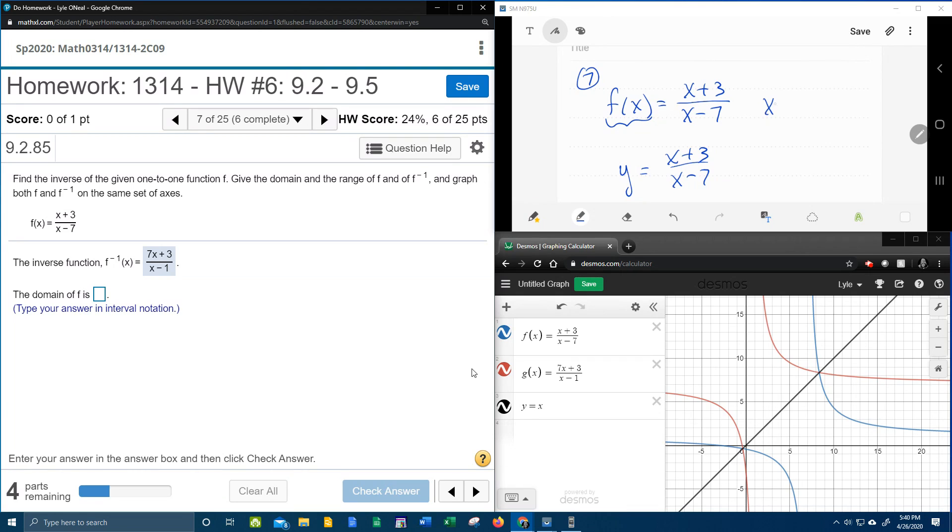We know that a rational function has a restriction. The denominator cannot be 0. So if I move the 7 over, that says x cannot be 7.